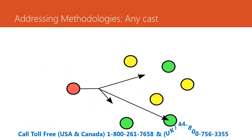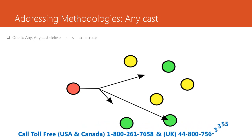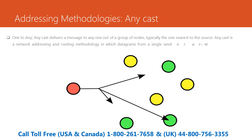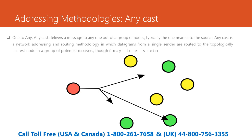The fourth addressing methodology is anycast — one to any. Anycast delivers a message to any one out of a group of nodes, typically the one nearest to the source. Anycast is a network addressing and routing methodology in which datagrams from a single sender are routed to the topologically nearest node in a group of potential receivers, all identified by the same destination address.